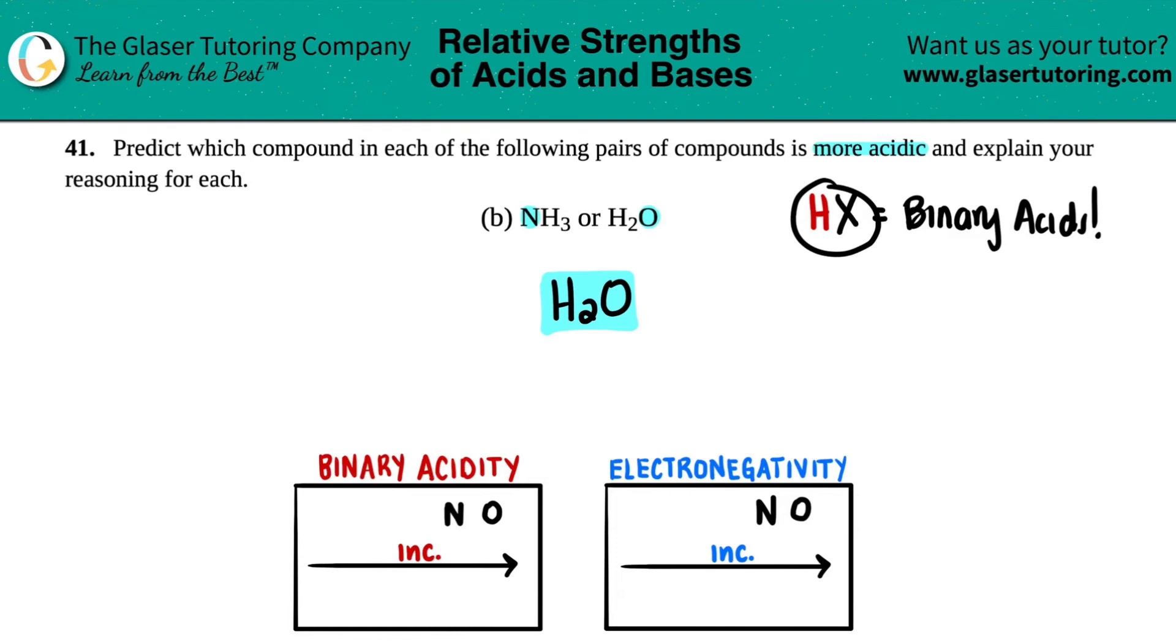The remainder becomes negative. So the quickness of having that hydrogen being lost means that your acidity will increase. Remember, that's what acids do - acids donate, they lose a hydrogen. Since oxygen is more electronegative...